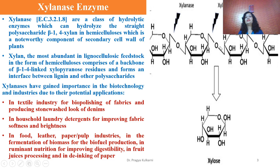This is the structure of normal xylan. It is a polymer linked with beta-1,4 linkage between the first and fourth carbon of the monomer. It gets hydrolyzed with the action of beta-1,4 xylanase enzyme and is converted into the monomer, that is xylose.